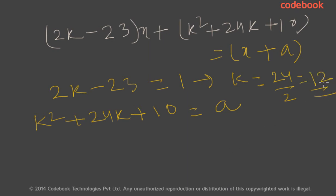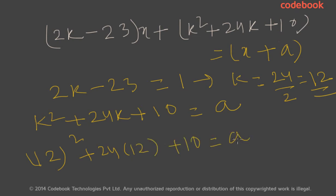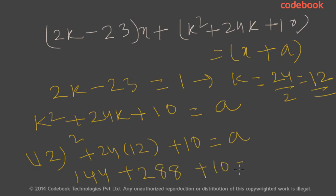Now substitute k equal to 12 into the expression for a: 12 squared plus 24 times 12 plus 10 equals a. Simplifying: 12 squared is 144, and 24 times 12 is 288. So 144 plus 288 plus 10 equals 442. Therefore a is equal to 442.